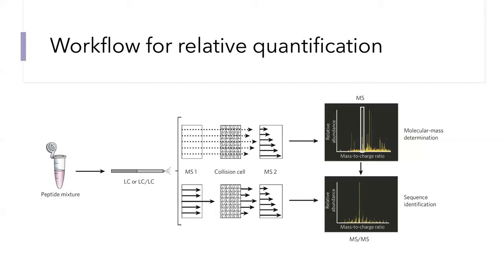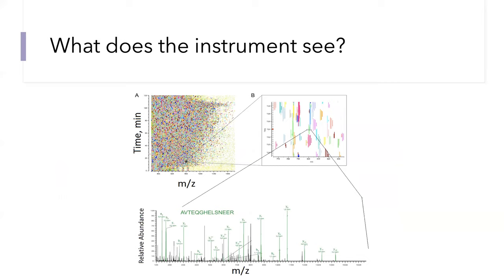If a single precursor is selected, this is usually called data-dependent analysis. If multiple precursors are selected, it is called data-independent analysis. This is an important distinction between these two types of analysis, which I will not explain in detail in this lecture — but if it's something of interest, I can cover it in subsequent lectures or we can discuss further in class.